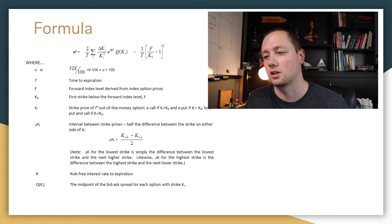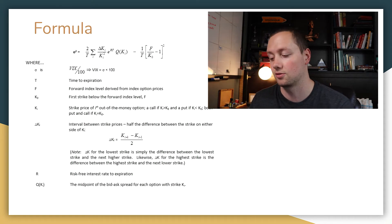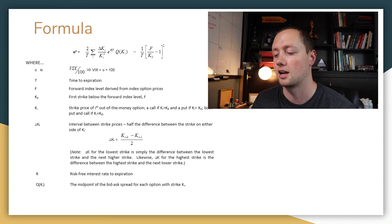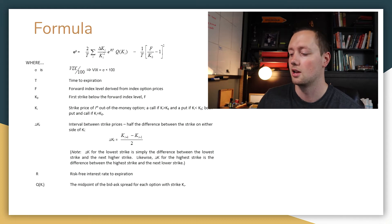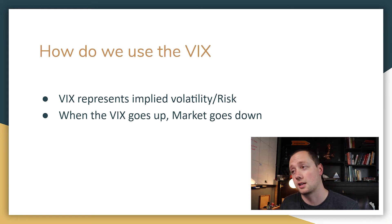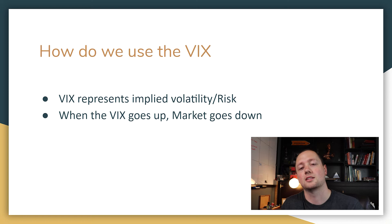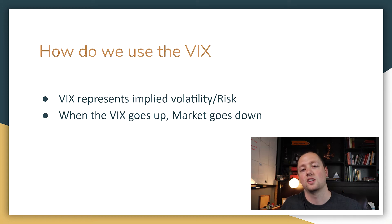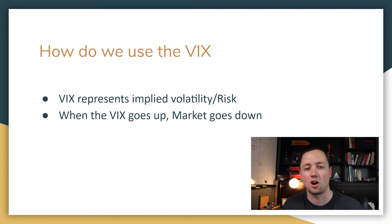This is the formula for the VIX. It's pretty complicated, and when you extend it out it goes what seems like forever, but I'm not going to dive into it — I kind of gave you the summary there. What I want to do is show you how we can use the VIX in our trading. The VIX represents implied volatility or risk. When the VIX goes up, it means that the market generally goes down. And when the VIX goes down, the market generally goes up because there's more confidence in the economy and the ability of these companies to make money.